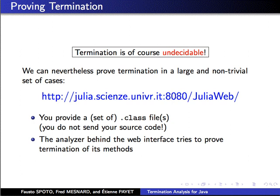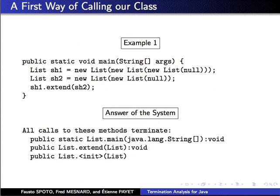Consider that since termination is undecidable, you will find some methods that terminate, but there will be other methods that terminate but the analyzer will not be able to prove it. For instance, we call Extend with two distinct lists, and the analyzer correctly tells you that all methods terminate, including the Extend method.